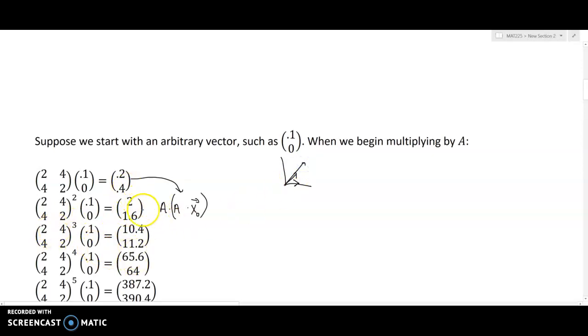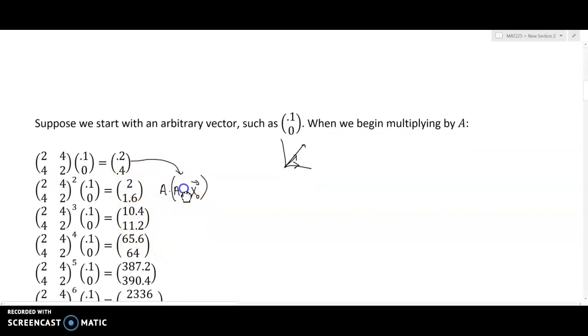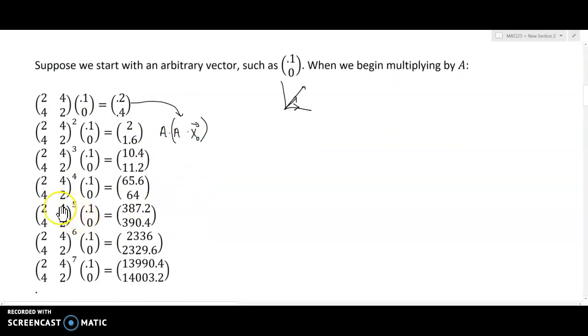And we continue repeating this process and we're not really quite sure what we're looking for, but as we get to the fifth power and five multiplications by the A matrix and six multiplications, something interesting is happening here, we see that the two values seem to be getting more and more similar. 387, 390, 2336, 2329, 13990, 14003.